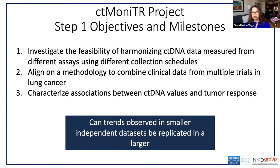As Jeff and Julia previously mentioned, the CT Monitor project consists of two steps. Step one will set the foundation for future work. We were primarily interested in determining whether trends observed in independent data sets could be replicated in aggregate. To do this, we had to address several challenges, such as developing tools for streamlining the data intake processes, understanding the existing CT-DNA data available, evaluating the feasibility of harmonizing CT-DNA data generated by different sources and harmonizing clinical data, and analyzing the relationship between CT-DNA values and tumor response. We now ask ourselves what are the research questions we should prioritize for step two, and what can we learn from step one to develop an informed framework for step two?